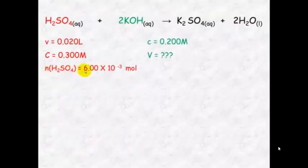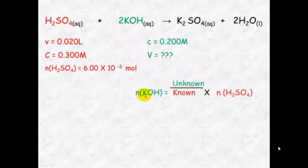So we will take this information here. Again we will use the mole ratio between the sulfuric acid and the potassium hydroxide to calculate the number of moles of potassium hydroxide which will equal the unknown over known ratio which is 2 divided by 1 times the number of mole.